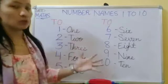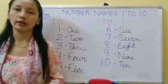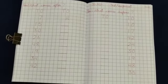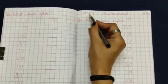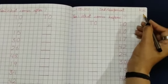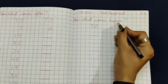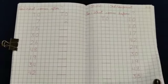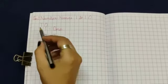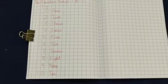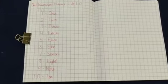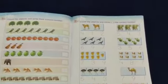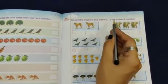Students, you will do this work in your maths notebook in very beautiful handwriting. This is your third assignment. First write down the date, after that write 'Third Assignment Homework', then write 'What comes before' and fill in the numbers that come before the given numbers. Next, write number names from 1 to 10 and learn them. Now come to your maths book on page number 9, where you will count the objects and circle the correct number.